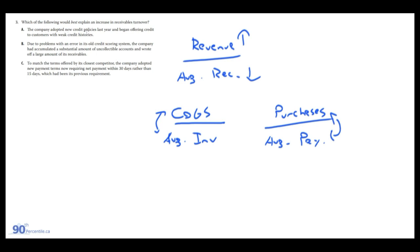To explain an increase in receivables turnover, either revenue goes up or average receivables go down. Option A: the company adopted new credit policies and began offering credit to customers with weak credit histories — this would increase average receivables, so no. Option B: due to an error in its old credit scoring system, the company accumulated uncollectible accounts and wrote off a large amount of receivables. This is it, because it would decrease average receivables.